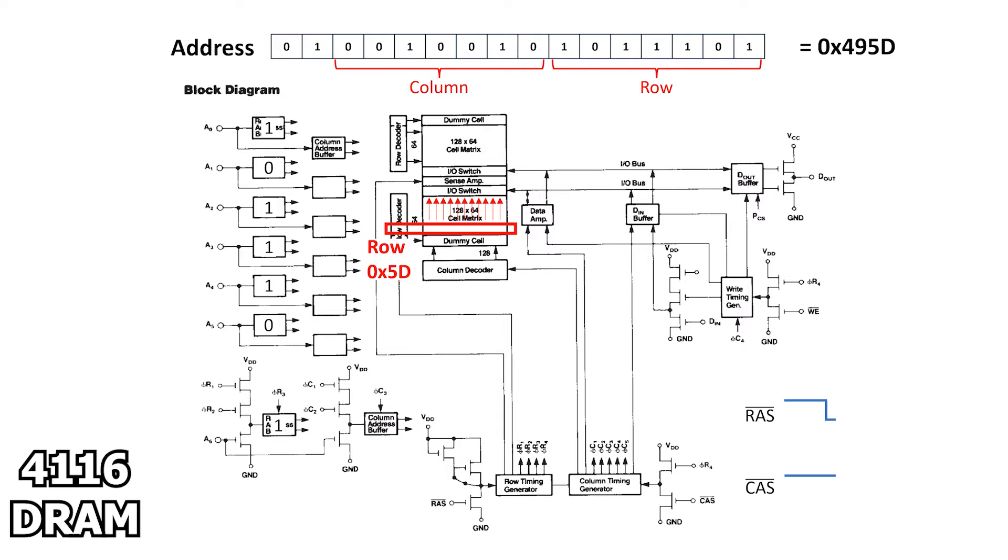Obviously, only those storing a charge, representing a 1, actually discharge their value onto the bus. This, ever so slightly, changes the voltage on each line of the 128-bit internal bus, but enough to be detected by the sense amplifiers. From there, the data goes into the I/O switch. It's important to note that this occurs before the chip even knows the column address.